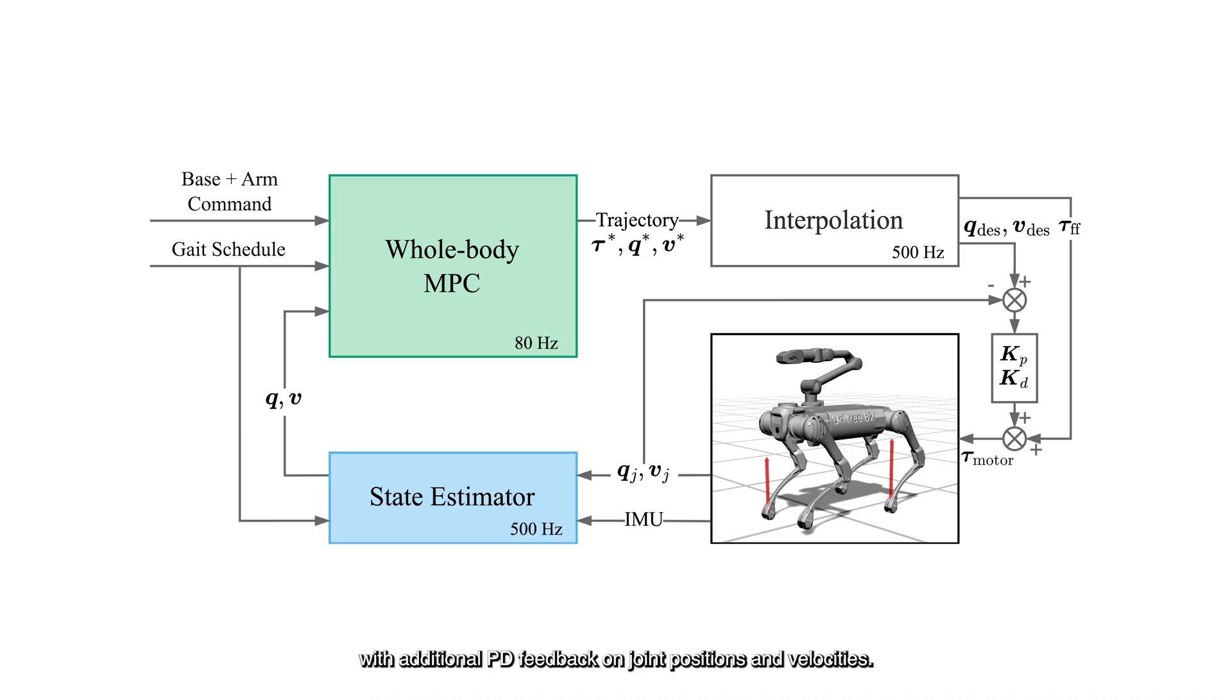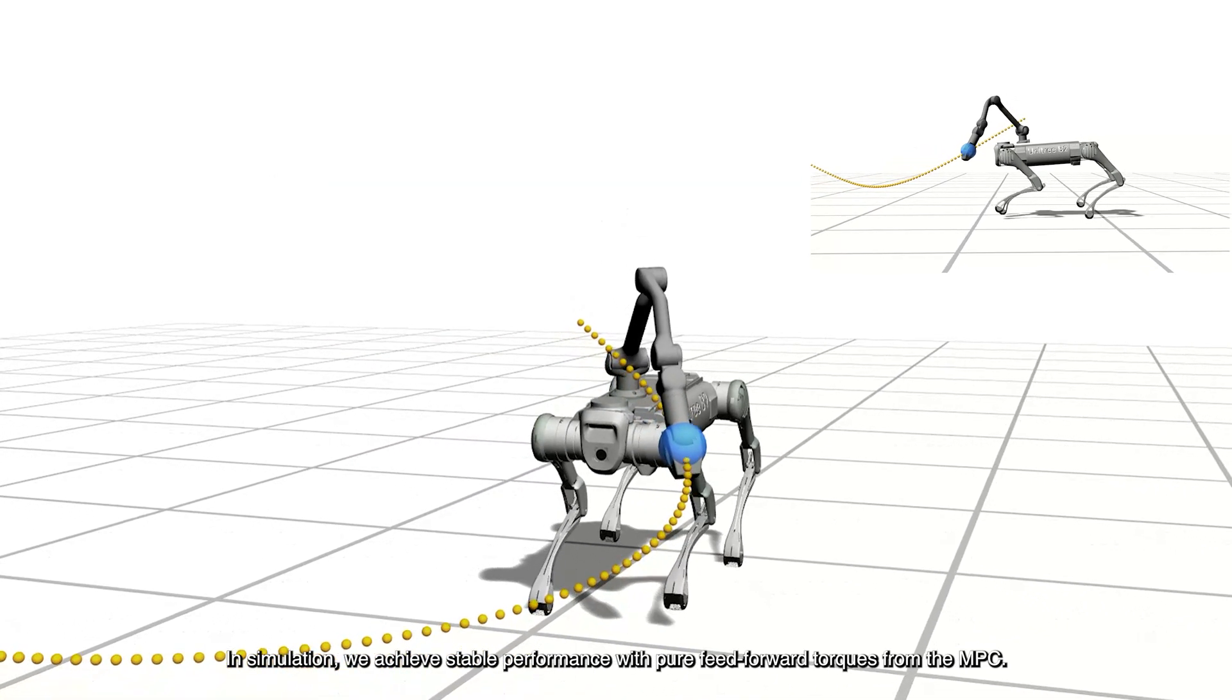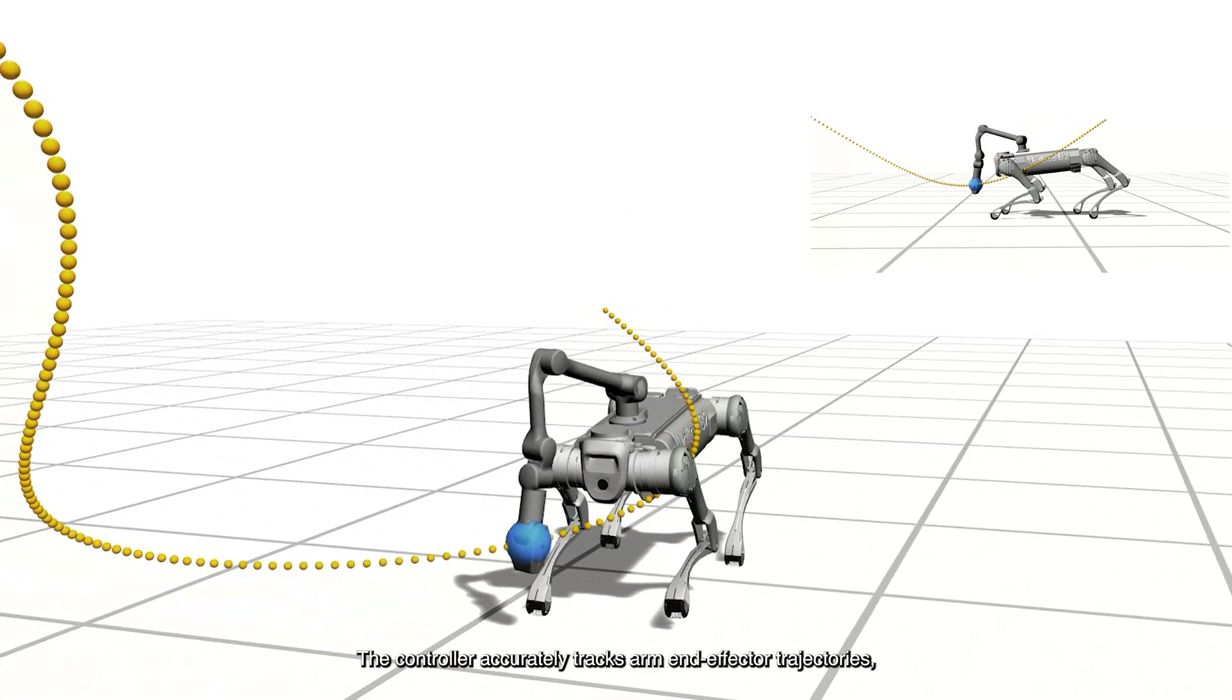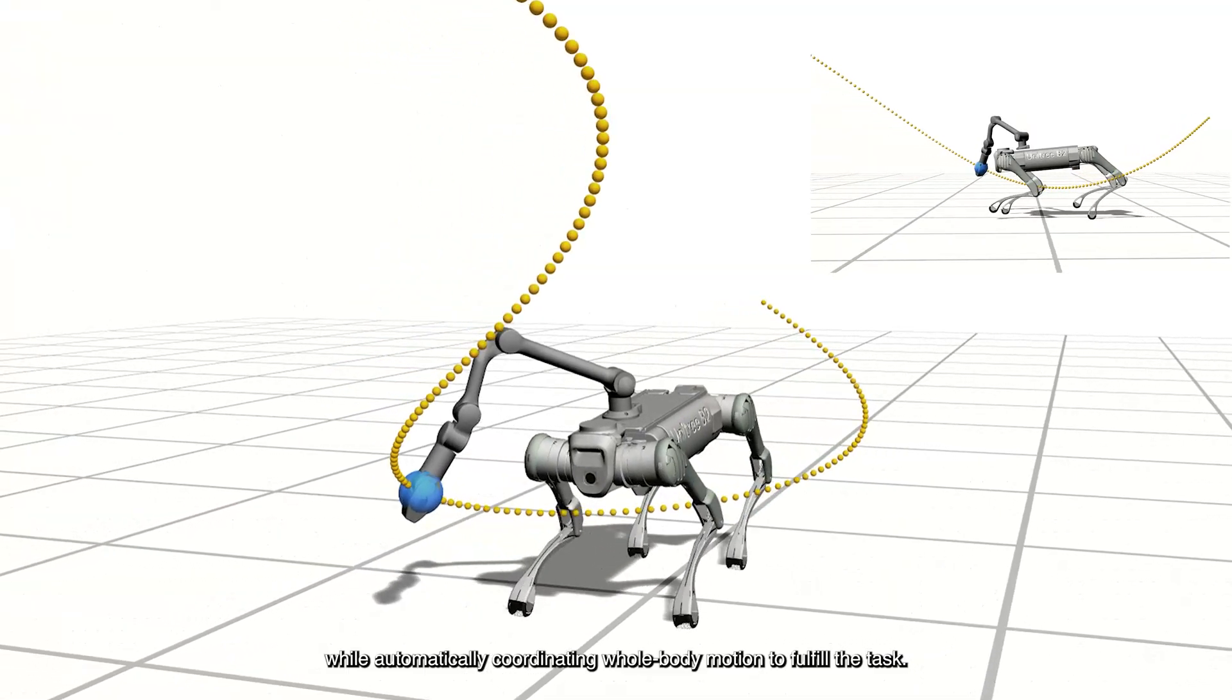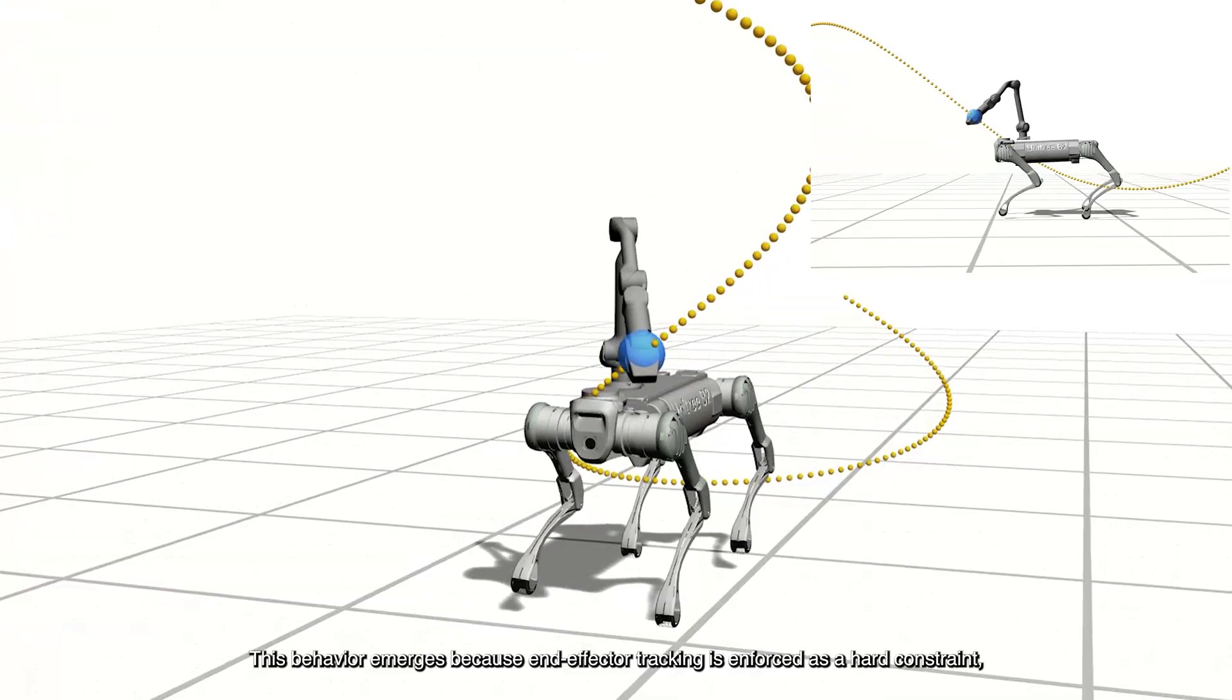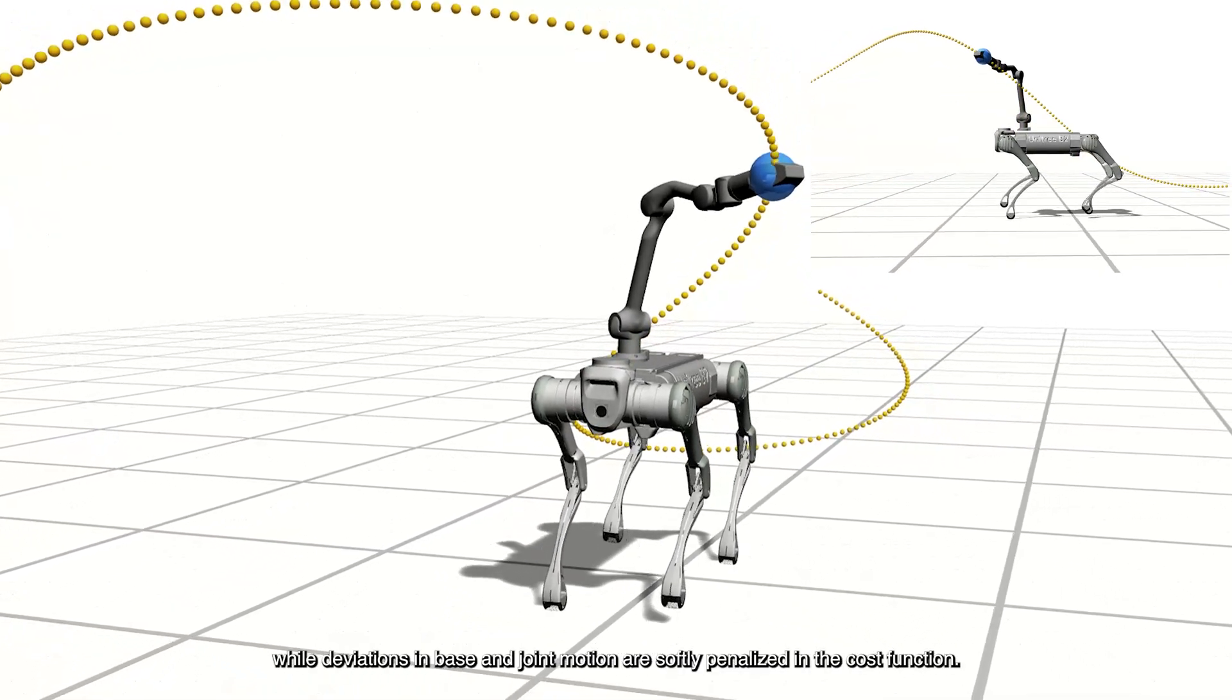In simulation, we achieve stable performance with pure feedforward torques from the MPC. The controller accurately tracks arm end-effector trajectories while automatically coordinating whole-body motion to fulfill the task. This behavior emerges because end-effector tracking is enforced as a hard constraint, while deviations in base and joint motion are softly penalized in the cost function.